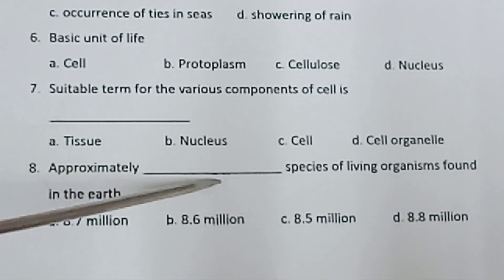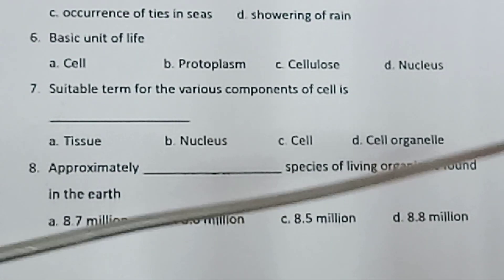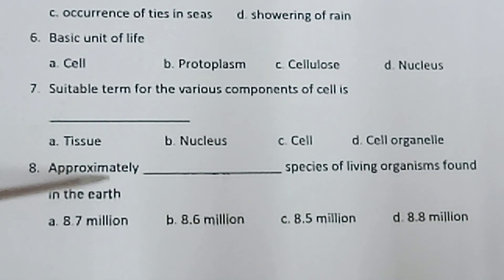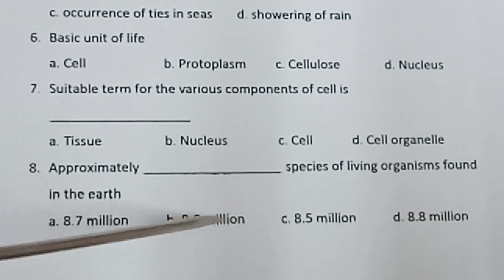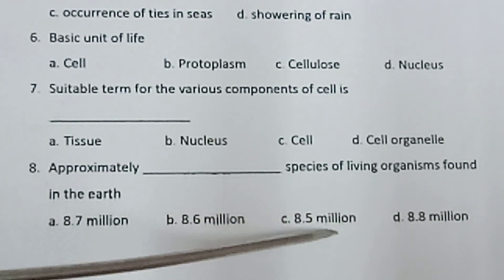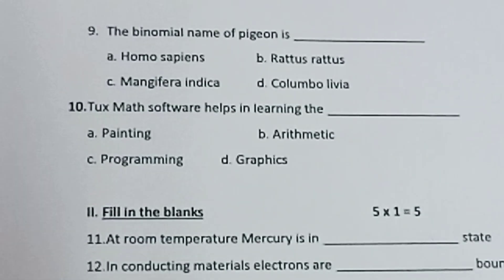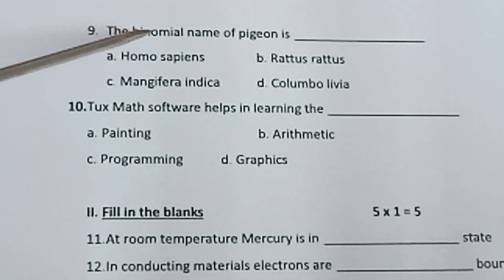Eighth one: Approximately dash species of living organisms are found on Earth — 8.7 million, 8.6 million, 8.5 million, 8.8 million.